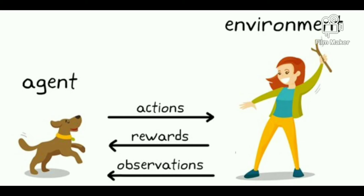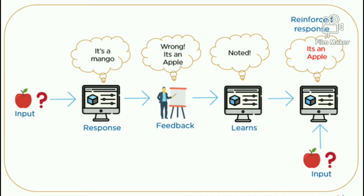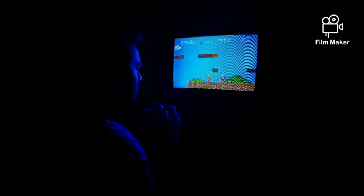Reinforcement learning is learning from your mistakes. Place the reinforcement learning algorithm into any environment and it will make a lot of mistakes in the beginning. As long as we provide some sort of signal to the algorithm — associating good behaviors with a positive signal and bad behaviors with a negative one — we can reinforce our algorithm to prefer good behaviors over bad behavior. Over time, the algorithm learns to make fewer mistakes, following the concept of hit and trial.